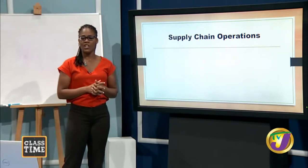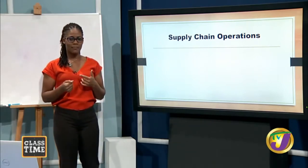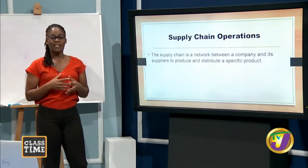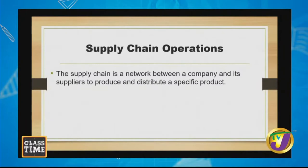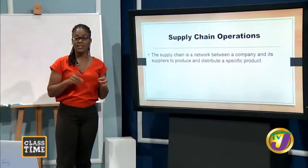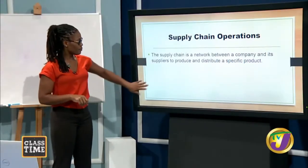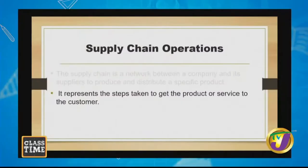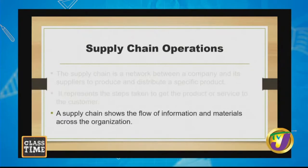What is supply chain operations? The supply chain is a network between a company and its suppliers to produce and distribute a specific product. There are basically four interrelated operations in the supply chain: the producer or manufacturer, the wholesaler, the retailer, and the consumer. The supply chain represents the steps taken to get the product or service to the customer, and it shows the flow of information and materials across an organization.